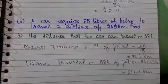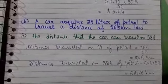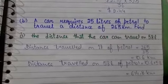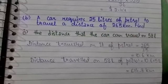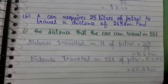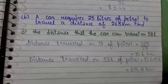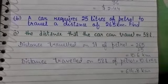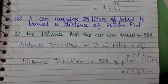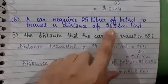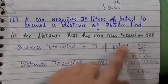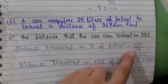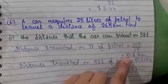Now part B. A car requires 25 liters of petrol to travel a distance of 265 kilometers. Find the distance that the car can travel on 58 liters. Firstly, we will find the distance traveled for 1 liter of petrol. For this, we use distance divided by the number of liters. So the distance is 265 kilometers divided by 25 liters of petrol. 265 divided by 25, the answer is 10.6 kilometers. This is for 1 liter of petrol.